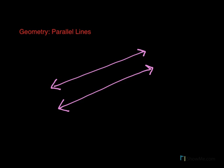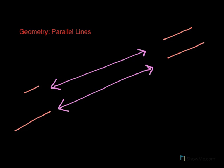Parallel lines are lines that are on the same plane — which is this screen, for instance — and are an equal distance apart, or equidistant apart, throughout the entire line. So they're the same distance apart from here and here. The really important thing about parallel lines is that if they continue in any direction, they'll never ever touch. Parallel lines will never intersect each other or touch.